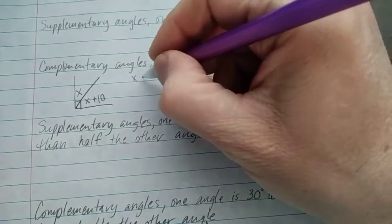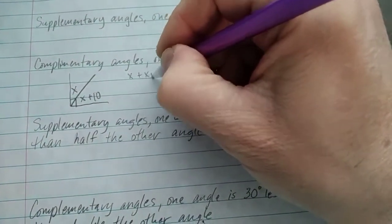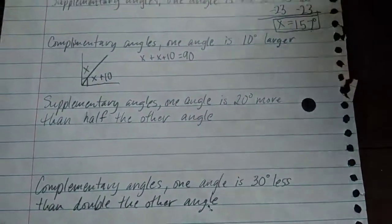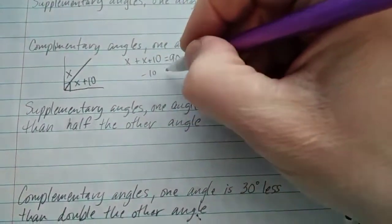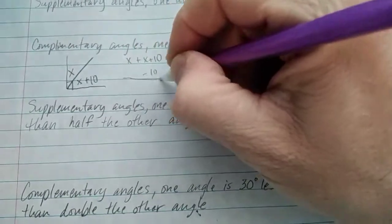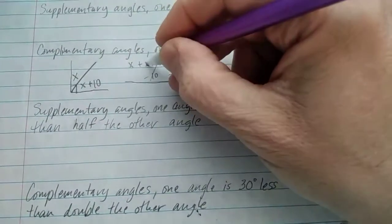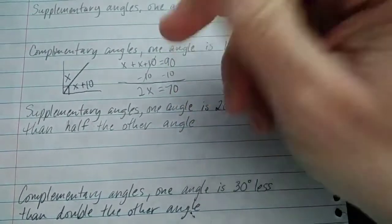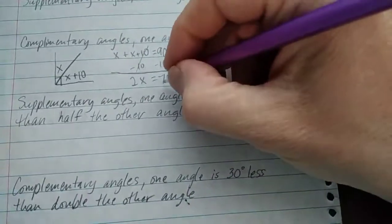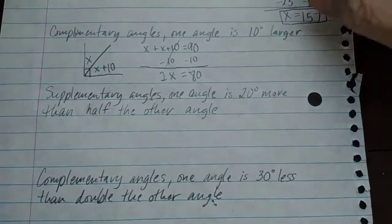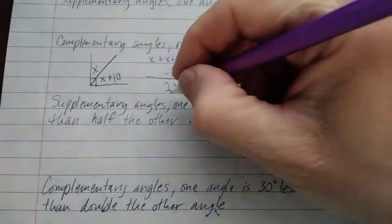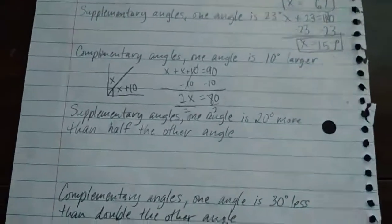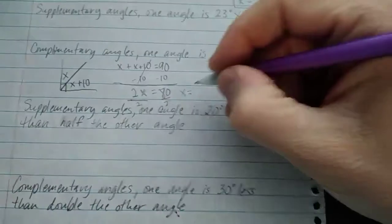So x plus x plus 10 equals 90. So I'm going to subtract 10 from both sides, and at the same time on this side, so that gets rid of the 10 over here, I'm going to add x and x to get 2x. Well, actually I can turn that into an 80 really cleverly. There we go. And now I divide both sides by 2.